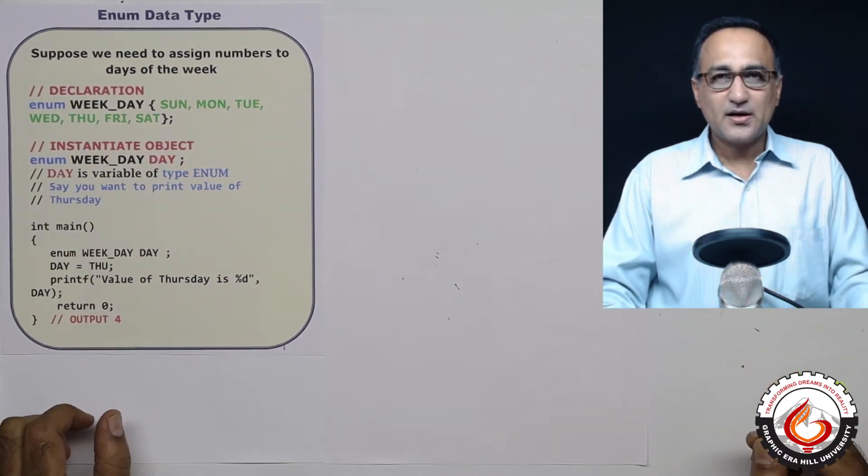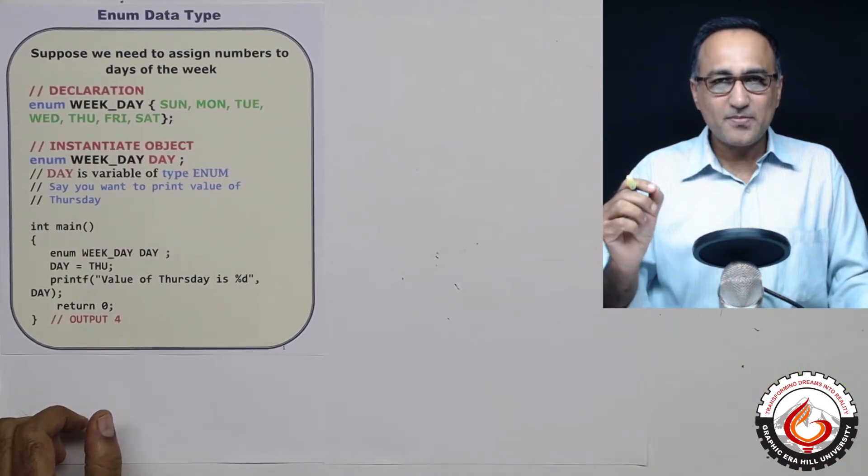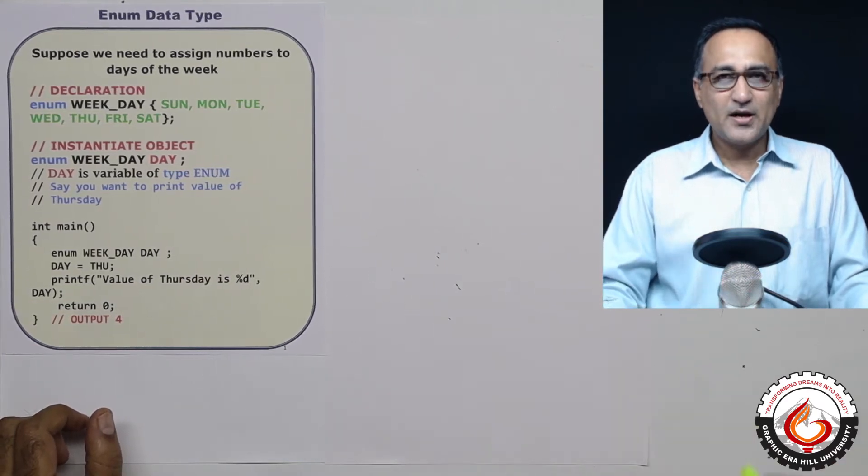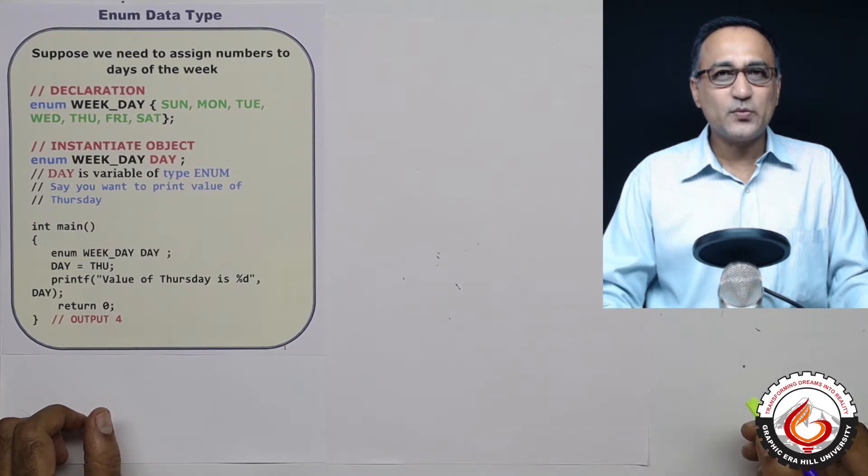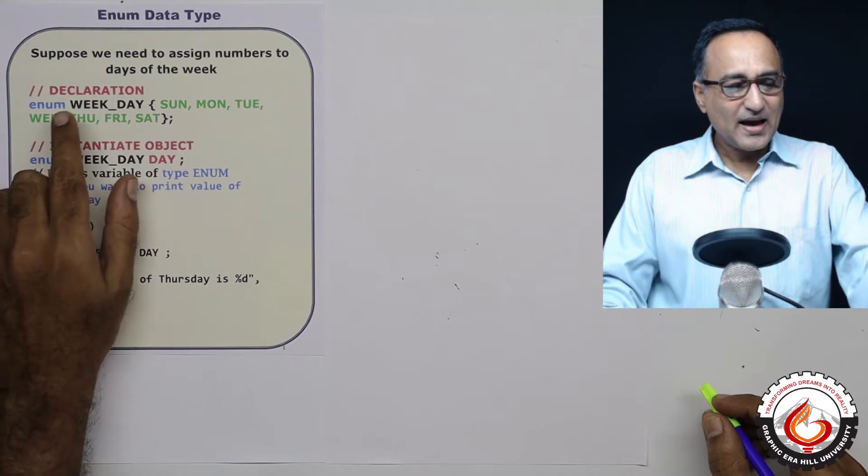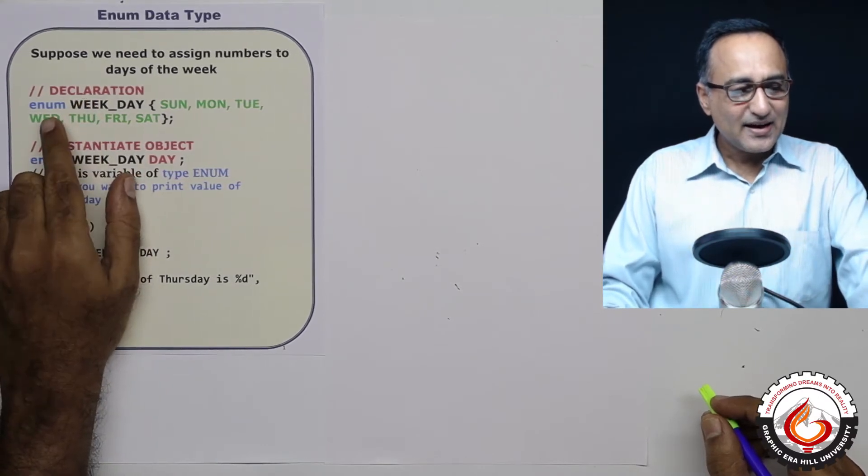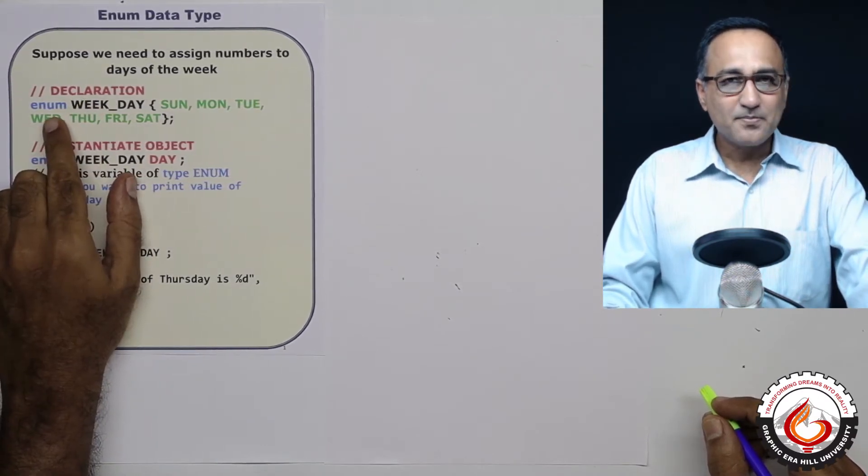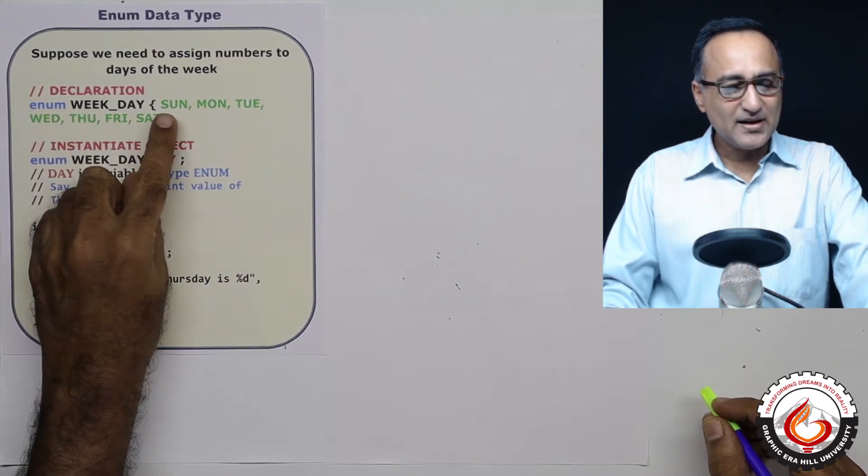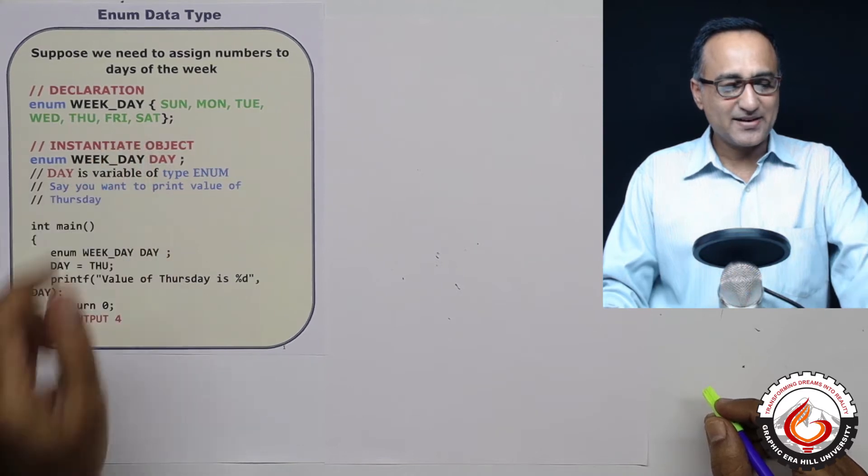Let's say I had days of the week starting from Sunday all the way till the coming Saturday. And for each of the day, I want to identify it with a number. So what I can do for that is I can declare an enum object like this. So I can say enum week_day, Sunday, Monday, Tuesday, all the way till Saturday.